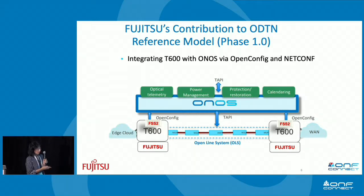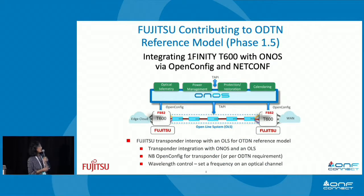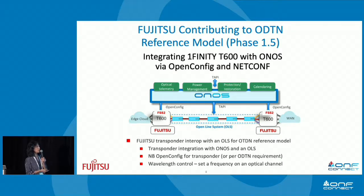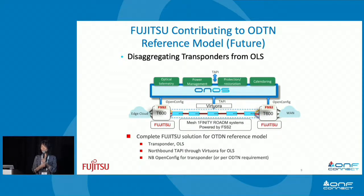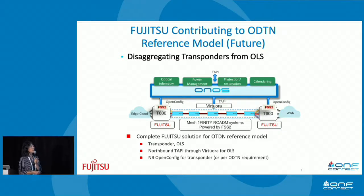This is phase 1.0. We are planning to support phase 1.5, which is to enable power and laser connectivity setup and configuration between the transponder and the third-party optical line system. We like the ODT model and want to contribute as well. For the future, we could potentially consider phase 2, which is more of a mesh ROADM network. Fujitsu L100 and L600 are ready for those — it's just a matter of enabling the virtual and talking with ONOS through TAPI. We are very proud and flattered to have this integration opportunity with ONOS.